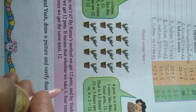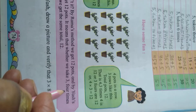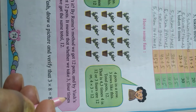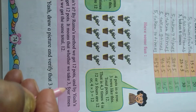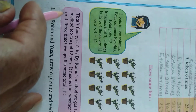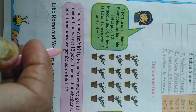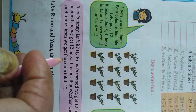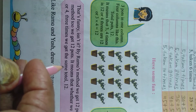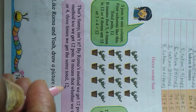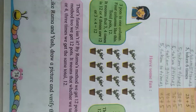It means that whether we take 3 four times or 4 three times, we get the same total.